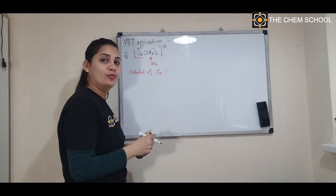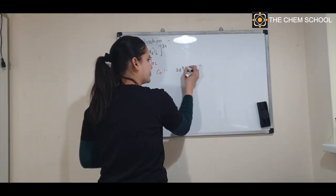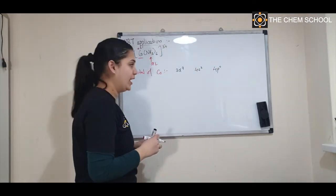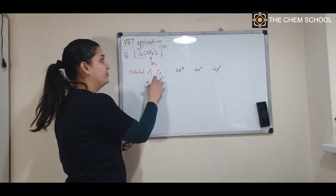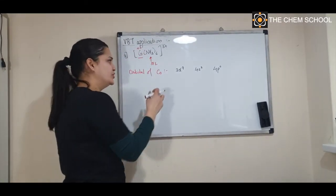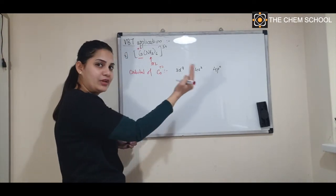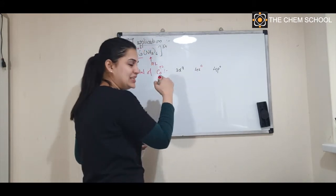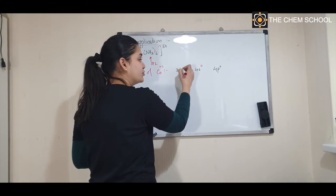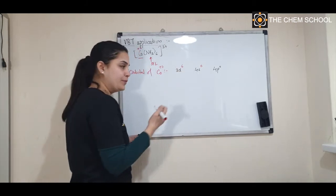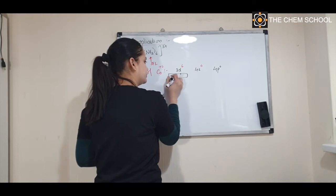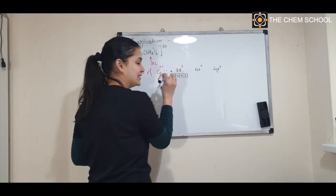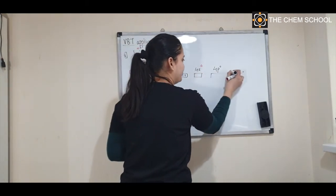Write down the orbitals of cobalt: 3d⁷, 4s², 4p⁰. But we want cobalt in the +3 state, so remove three electrons — 2 from 4s giving 4s⁰, and 1 from 3d giving 3d⁶. Draw the orbitals: six electrons in 3d, s orbital empty, p orbital empty.